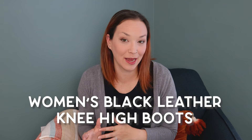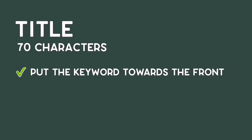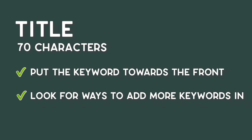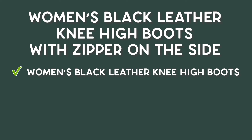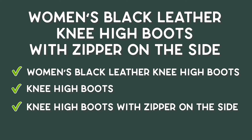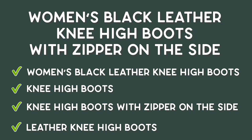Let's take the keyword 'women's black leather knee-high boots' and customize our search engine listing with it. For your title, you have 70 characters. You want to put the keyword towards the front and also look for ways to add more keywords in. So: 'Women's black leather knee-high boots with zipper on the side.' Now you've got 'women's black leather knee-high boots' as a keyword, 'knee-high boots' as a keyword, 'knee-high boots with zipper on side' as another keyword, and 'leather knee-high boots' — there are so many different things people could be searching for, and it gives you multiple keywords in this one main phrase.